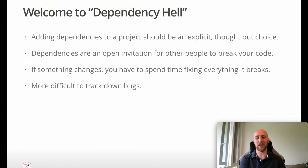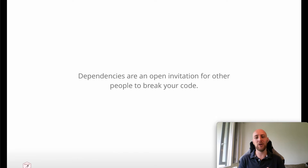If a package maintainer or developer changes something in that package and it breaks your code, it's not really their fault — they're well within their rights to do that. But ultimately this is going to be quite annoying for you. If something breaks, you have to take the time to figure out how and where it's broken, and this can be really difficult to track down. So dependencies are an open invitation for other people to break your code. When you're adding packages to your analysis, really think — do you actually need it?